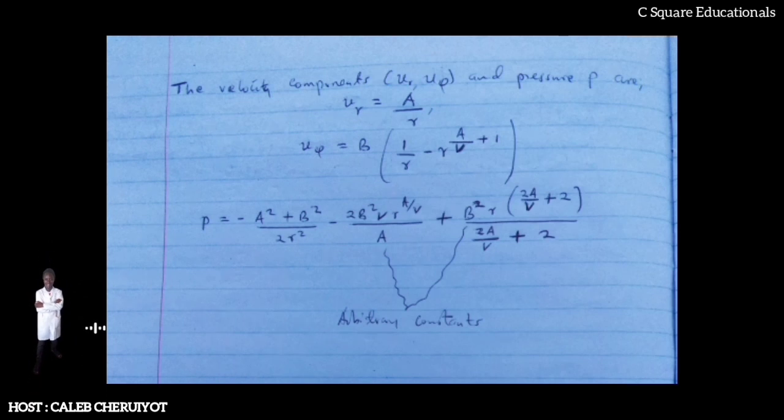For example, in the case of an unbounded planar domain with two-dimensional incompressible and stationary flow in polar coordinates (r, φ), the velocity components u_r and u_φ and pressure P are shown, where N and P are arbitrary constants. The solution is valid in the domain r ≥ 1 and for A < -2ν.